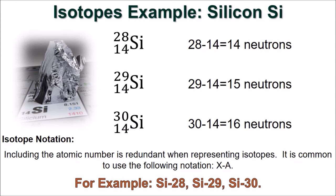Including the atomic number is redundant when representing isotopes. It is common to simply write the chemical symbol followed by the mass number.